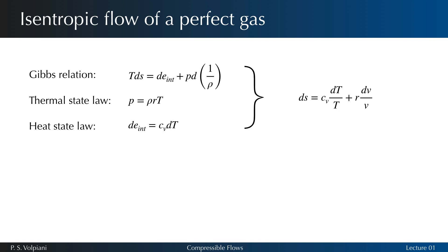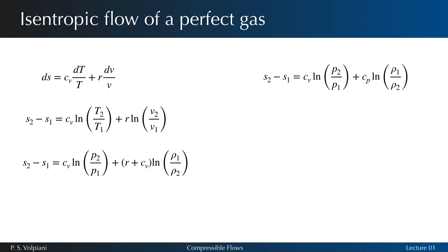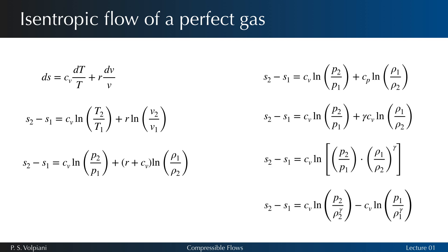In the case of an isentropic flow of perfect gas, we can write the Gibbs relation by using the thermal state law p = ρRT and the heat state law de_int = Cv dT and obtain dS = Cv dT/T + R dv/v. This relation can be integrated between two states 1 and 2. Applying the state law for both states, we know that T2/T1 = (p2 ρ1)/(p1 ρ2) and we deduce the following equation. Using Meyer relation Cp - Cv = R and by introducing the ratio γ of specific heats, we obtain the following expression.